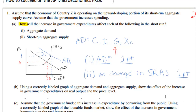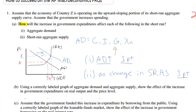Let's move on to part B. Part B says, using a correctly labeled graph of aggregate demand and aggregate supply, show the effect of the increase in government expenditures on real output and the price level. Fortunately, we've already done this. I'll put a little B next to the graph so the examiner knows it's for part B. We have shown that aggregate demand increases, the average price level increases, and real output increases.